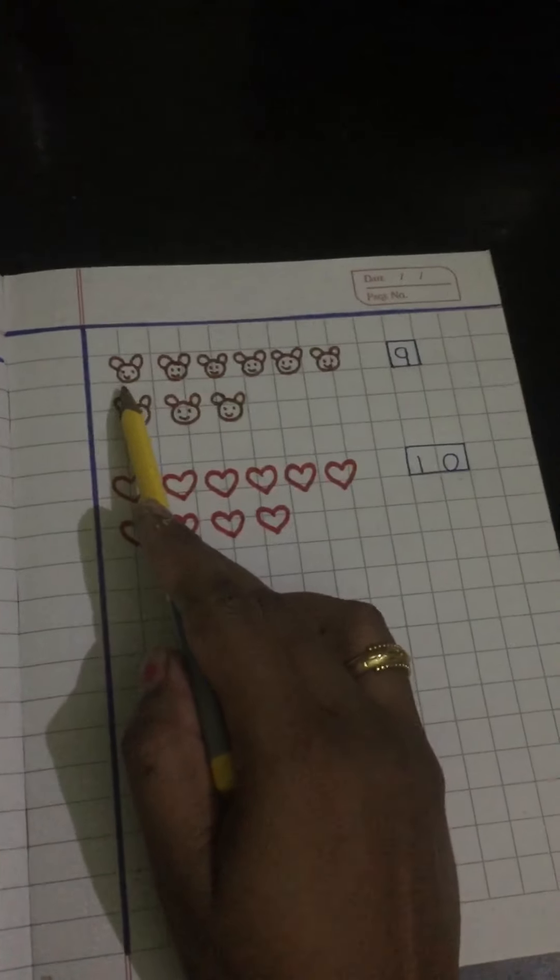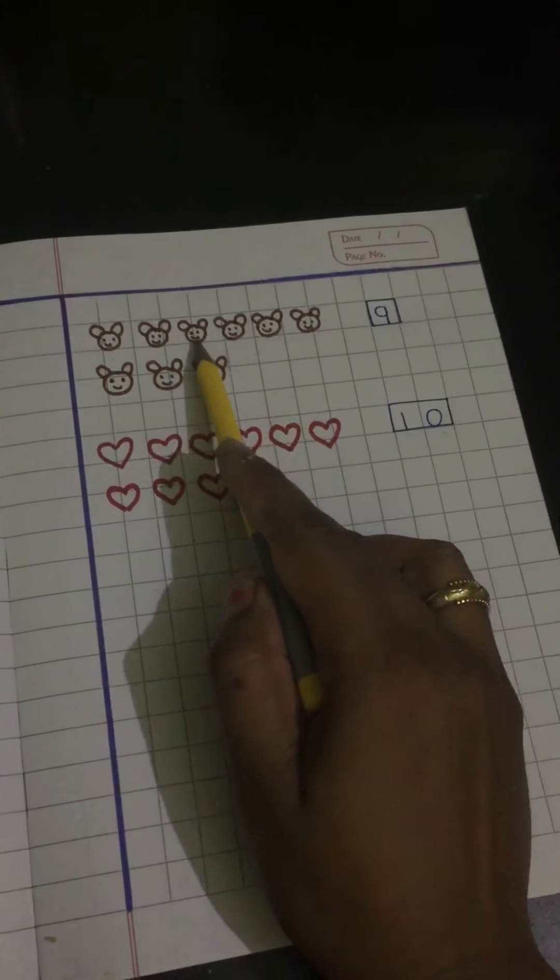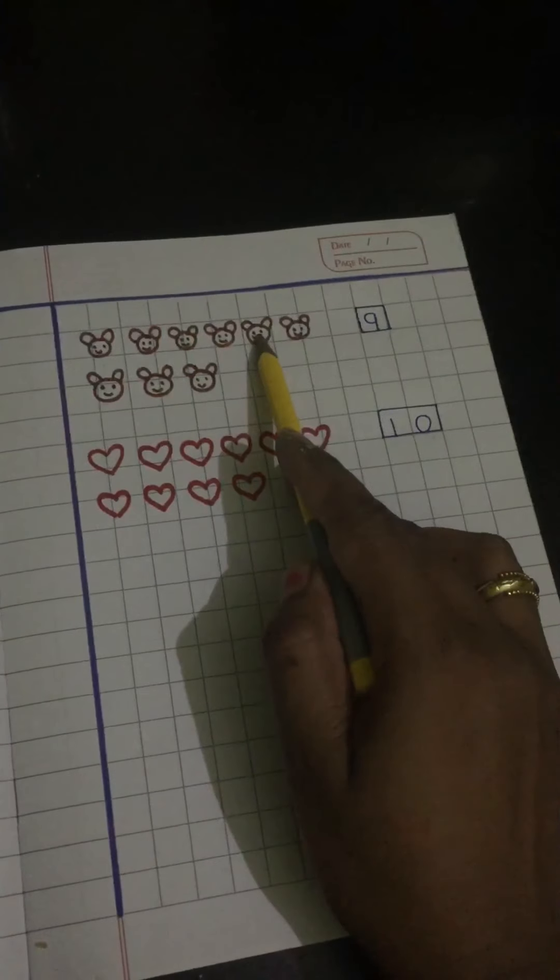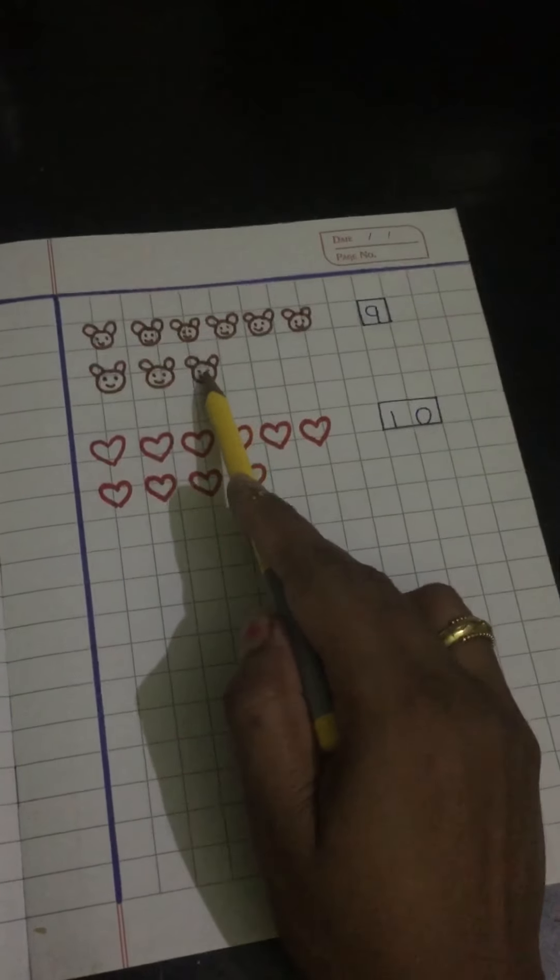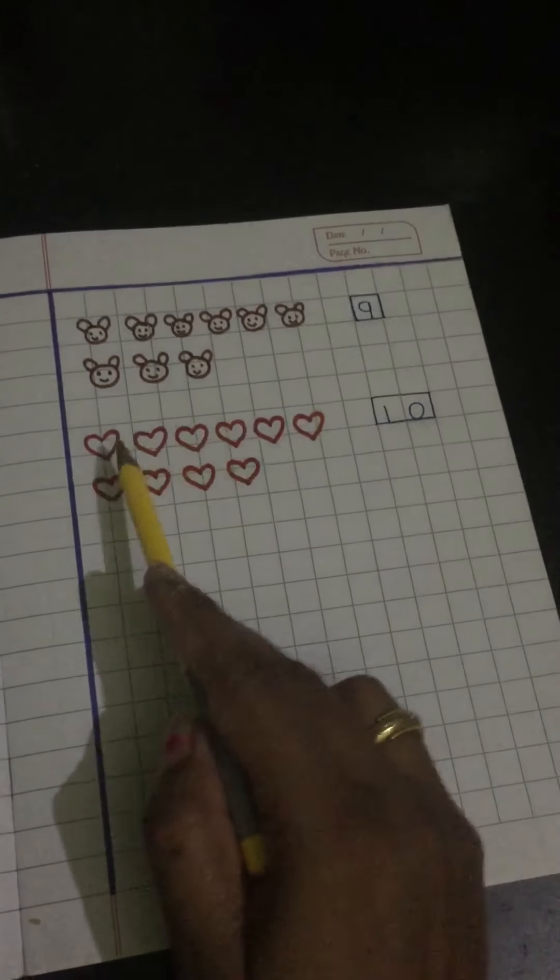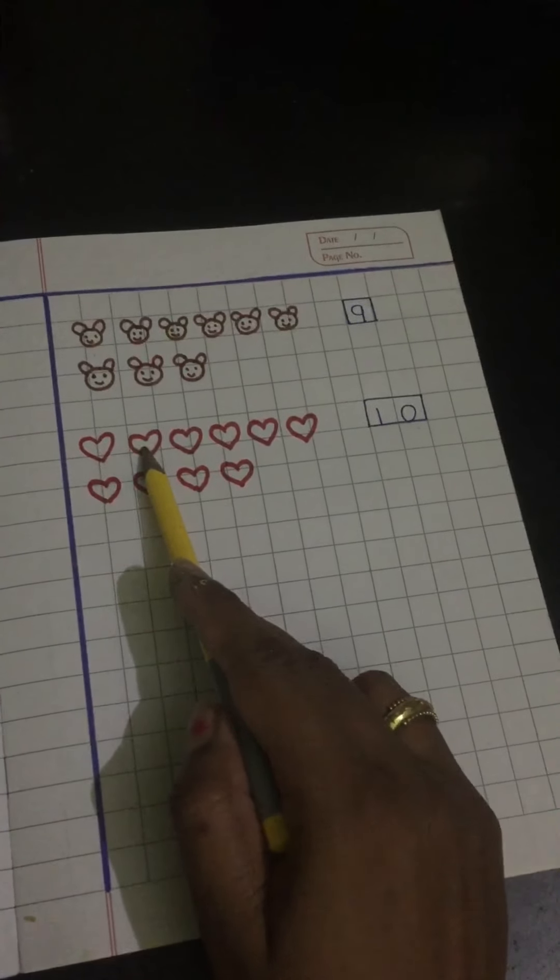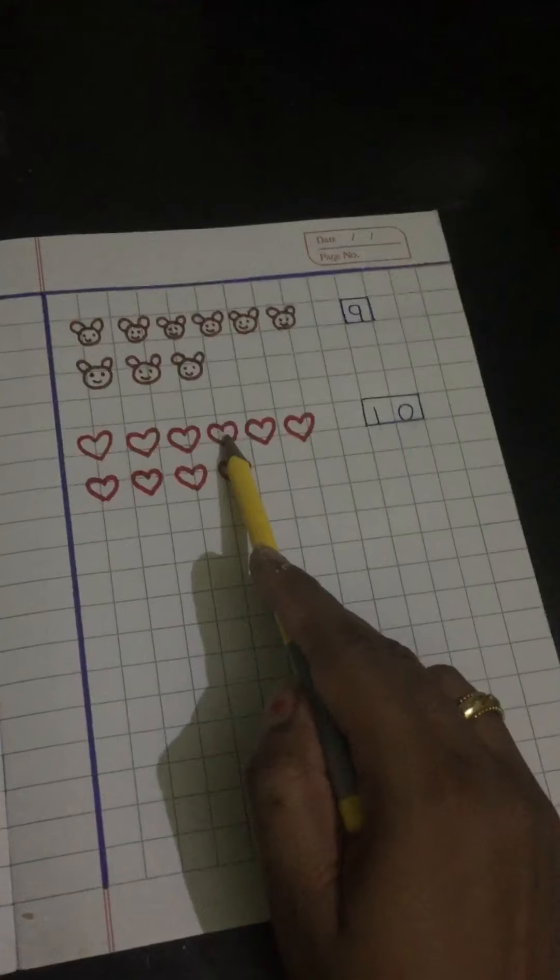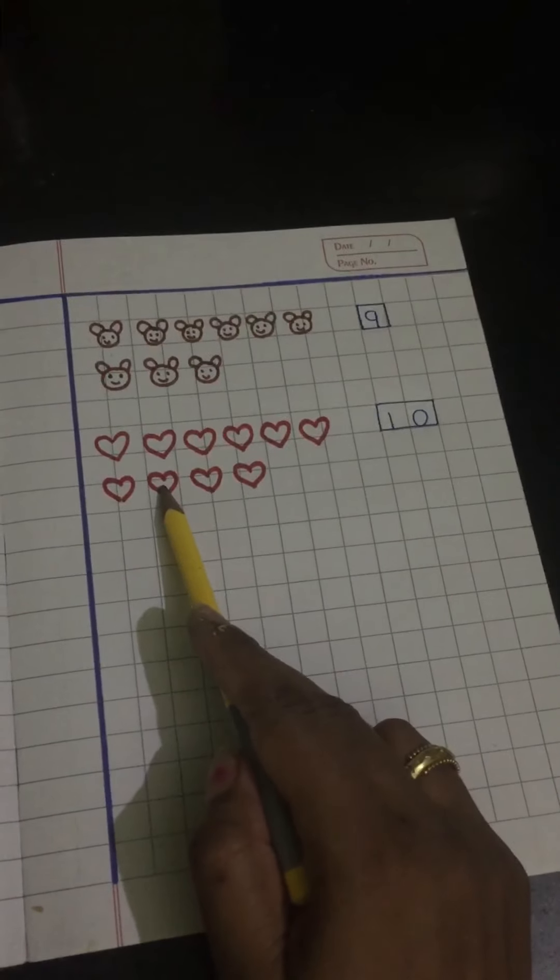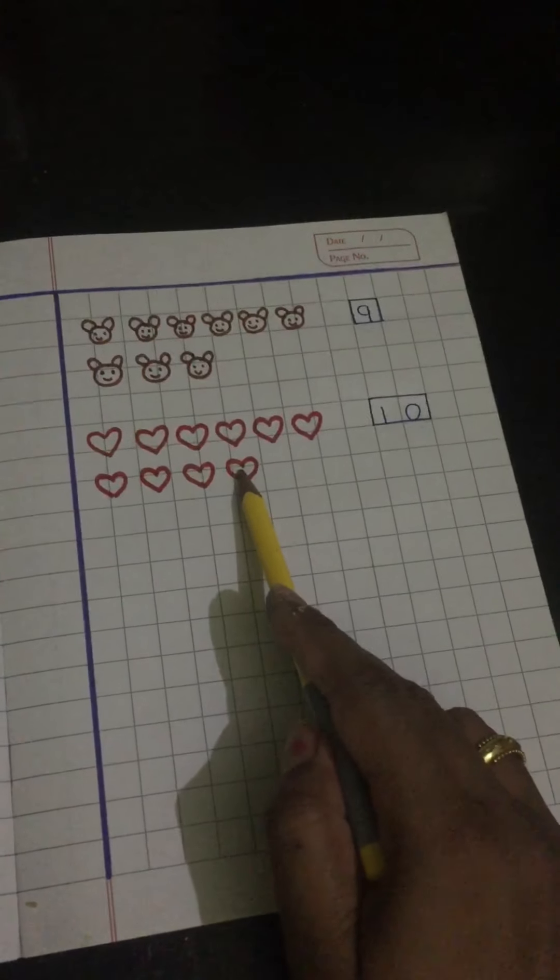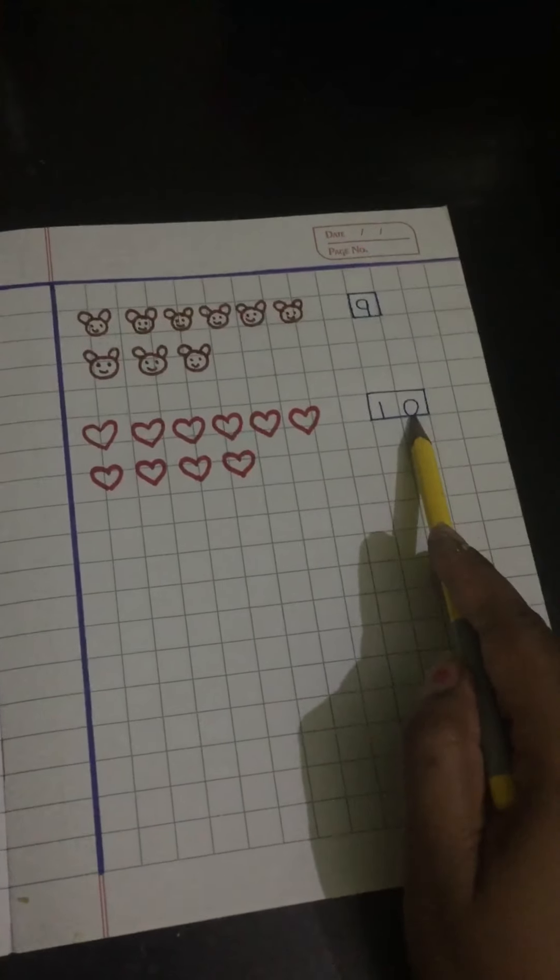One, one, two, two, three, four, five, five, six, seven, eight, nine. Nine. One, one, two, two, three, four, five, five, six, seven, seven, eight, nine, ten. One zero, ten.